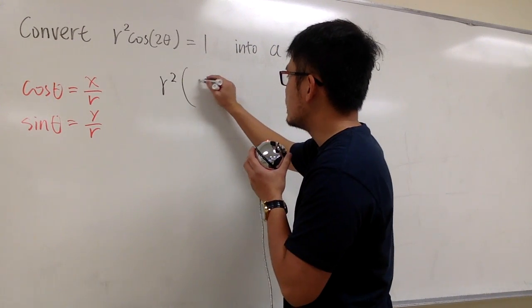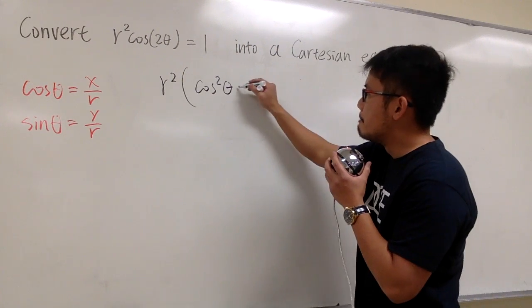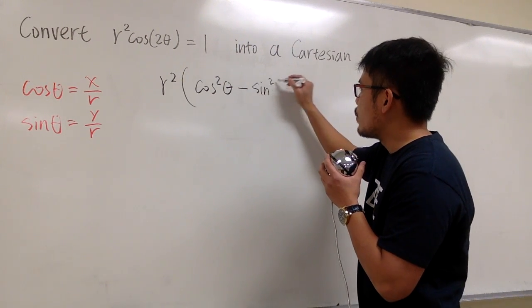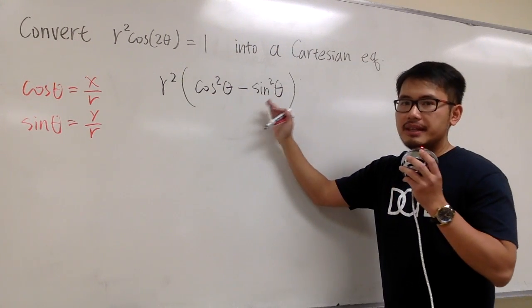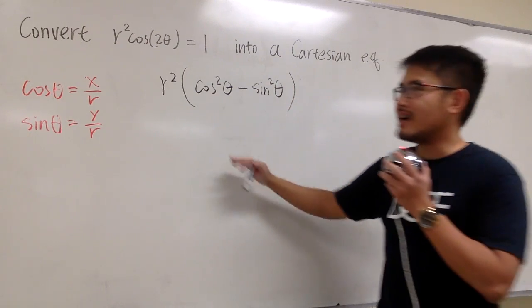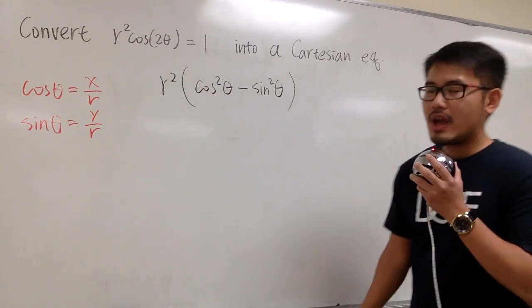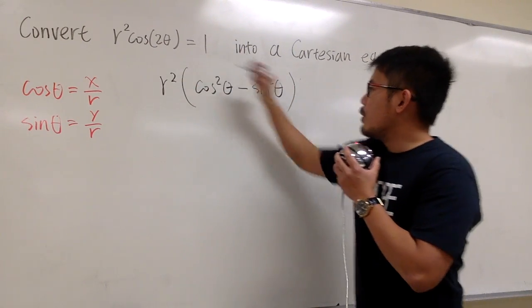Cosine of 2 theta is the same as cosine squared theta minus sine squared theta. This is just the double angle formula for the cosine. And then all of this is still equal to 1.